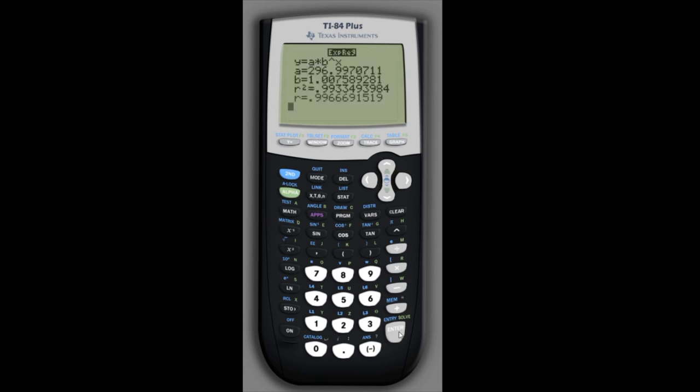and it'll give us the form of the model, which is a times b raised to x. Now, remember, we're using t instead of x, so you have to keep that straight, but otherwise, everything is pretty straightforward. It gives us the values for a and b.